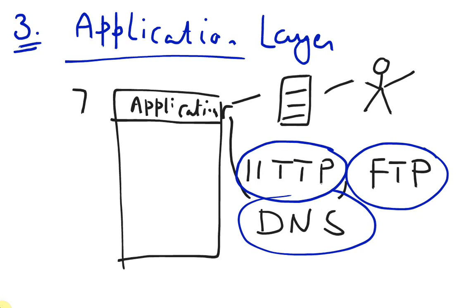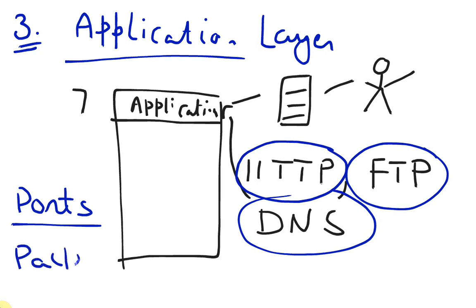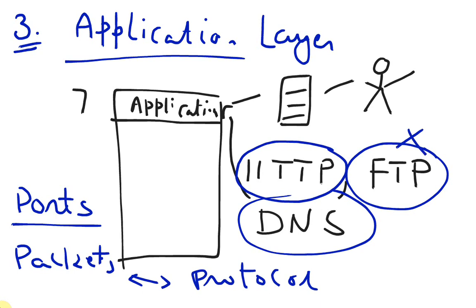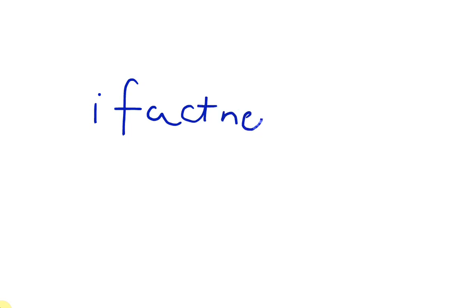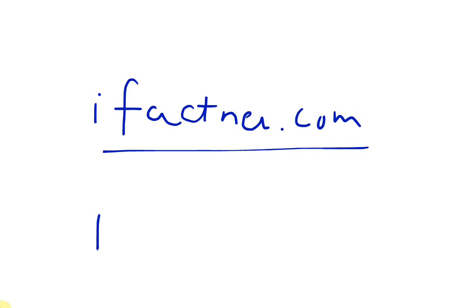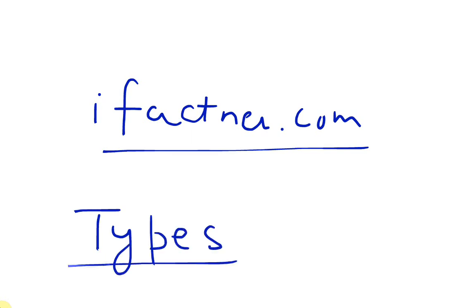Application layer firewalls can check if ports are open or not, and if packets are using special protocols. For example, if on our network we have not allowed communication through FTP (File Transfer Protocol), then all packets using those protocols would be denied. Thank you for joining me for this second tutorial on firewalls. If you would like to know more, please visit ifactner.com. In the next tutorial we will be discussing different types of firewalls available in the market. See you in the next tutorial.